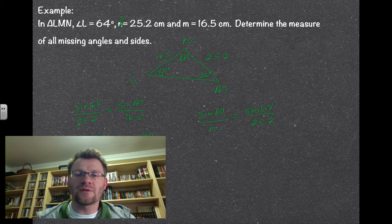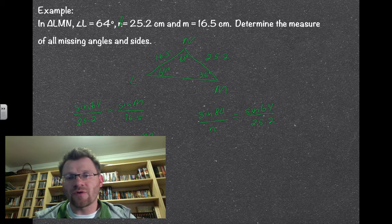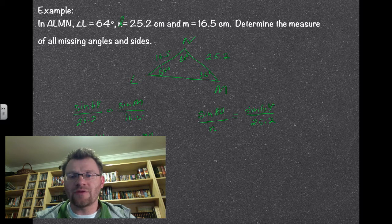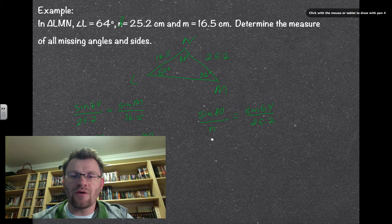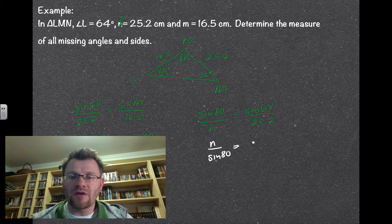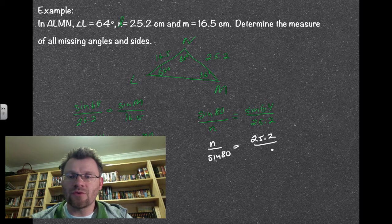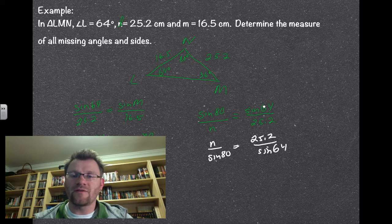Here's where some people get confused with a variable in the bottom. You can cross multiply, so just multiply it up to the top. Or if you wanted to, you could just rewrite this as n over sine 80 equals 25.2 over sine 64.